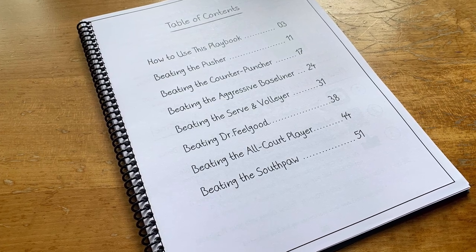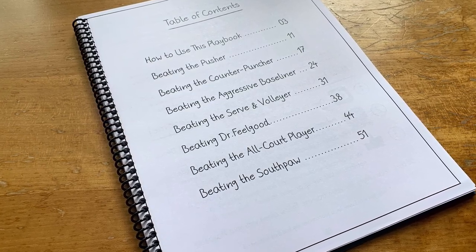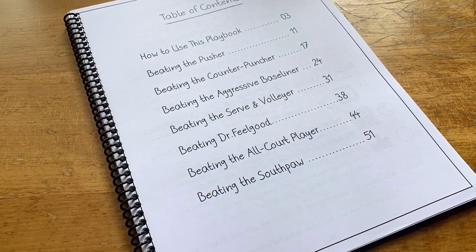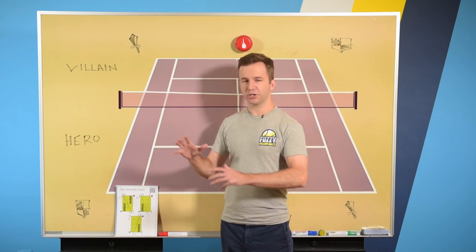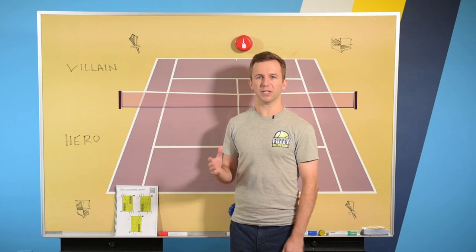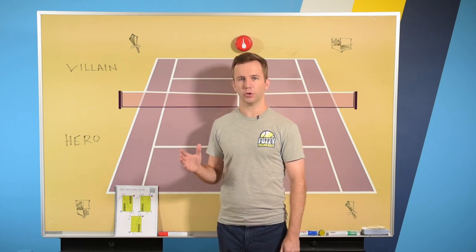We'll put up a shot of the table of contents of the Singles Playbook. You can see it's divided by the type of opponent, the type of villain you are facing, because sometimes a play is going to work great, but sometimes it's not going to quite work as well. It really depends on who you're playing.